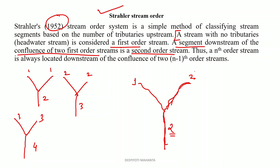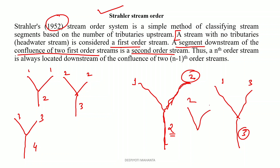The rule is: whichever stream has the higher number, we take that order for the resultant. For example, if a first order and third order meet, it will be a third order stream. If a second order and third order meet, the resultant stream will also be a third order stream. This is very simple, and questions from this topic appear in both JAM and GATE exams.